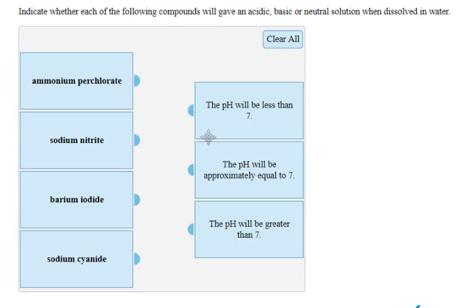In this problem we're asked to predict the relative pH of these ionic compounds. It's important that you write the formula for each compound to get a better sense if you're dealing with an acid or a base, or an ion that does not contribute to any acid-base chemistry.